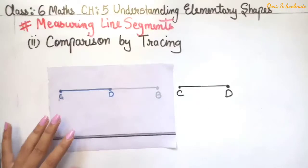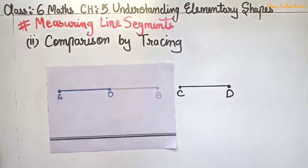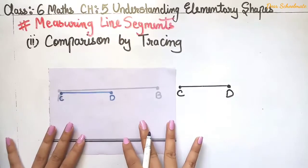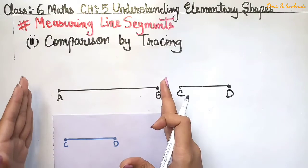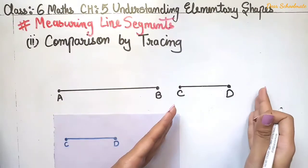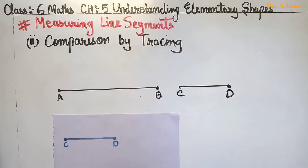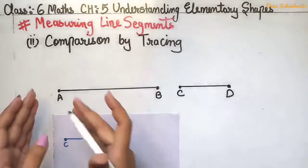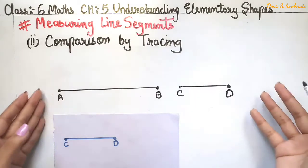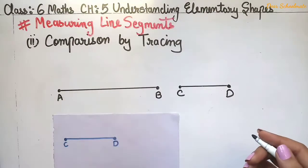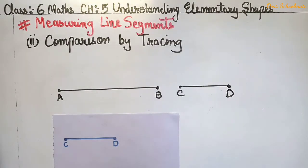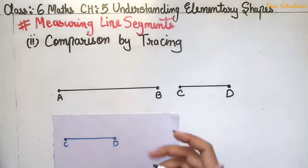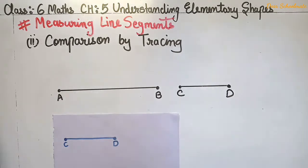But this method has a limitation. While we can tell that CD is shorter than AB when there is a big difference, this method depends on how accurately you trace the line segment. If the tracing is not precise, the comparison will not be accurate.